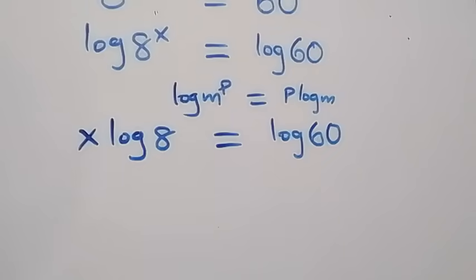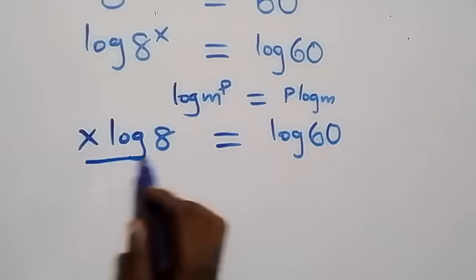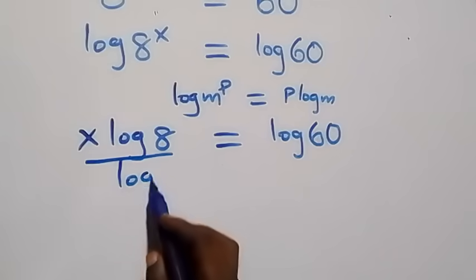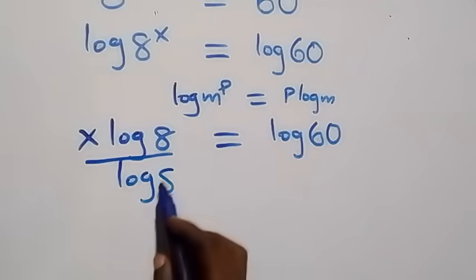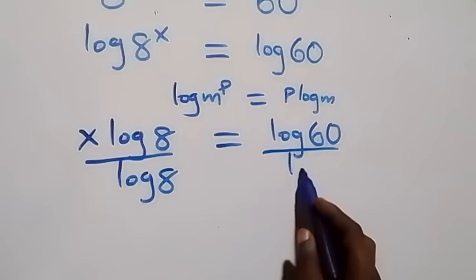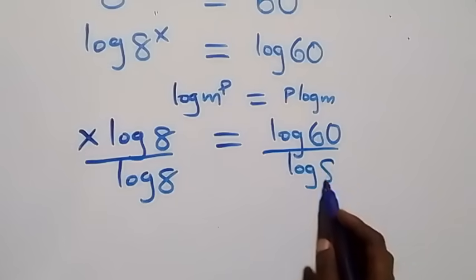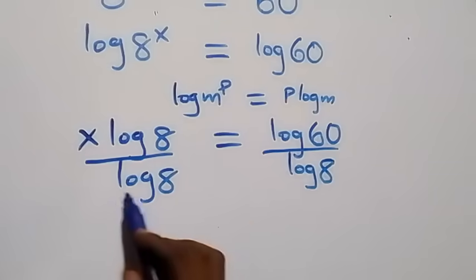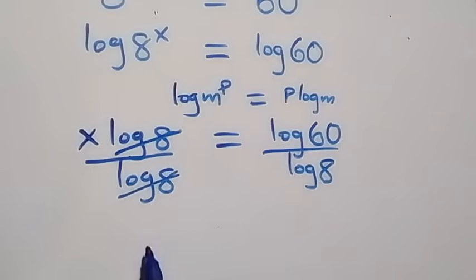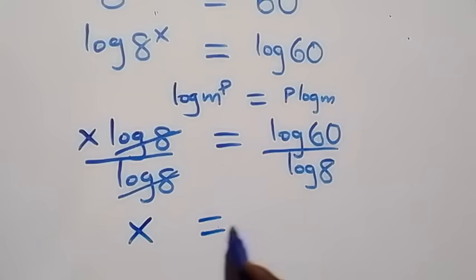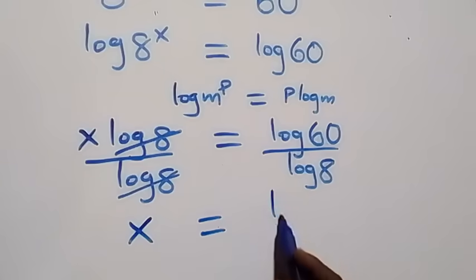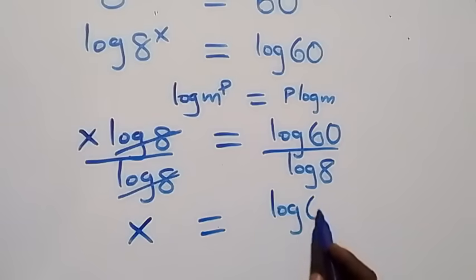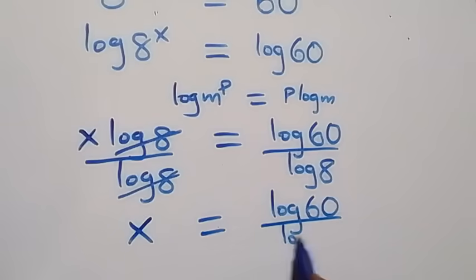The next step is to divide both sides by log 8. The log 8 terms cancel each other, and we are left with x equals log 60 over log 8.